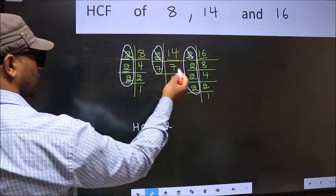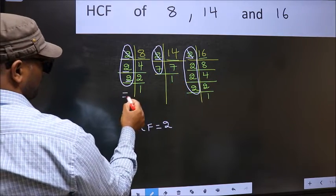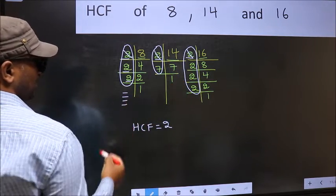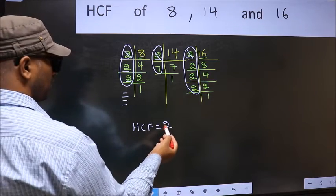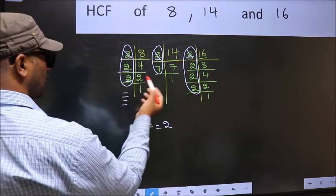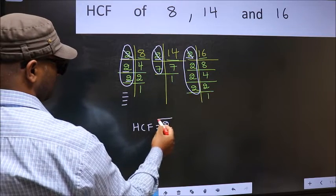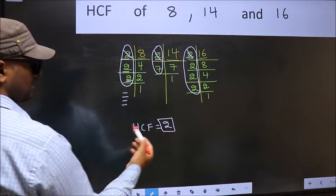No more numbers have been left out. So we got only one number 2 present in all the 3 places. So 2 itself is our HCF.